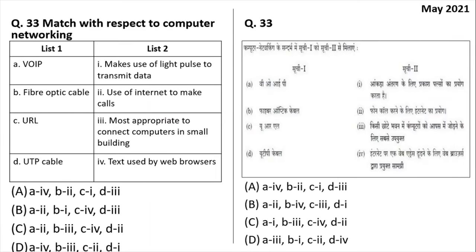Match the following: VOIP stands for Voice Over Internet Protocol and is used for making calls over the internet — matches with option 2. Fiber optic cable uses light to transmit data ('optic' means light) — matches with option 1. URL is text used by web browsers, such as http://google.com — matches with option 4. UTP stands for Unshielded Twisted Pair cable, used extensively as LAN cable for connecting small buildings — matches with option 3. The answer is 2, 1, 4, 3 — B is the right answer.